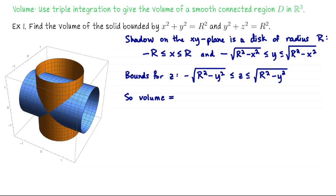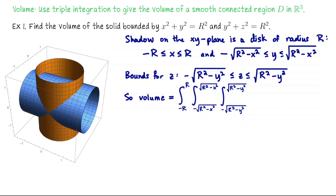The volume is the triple integral of 1 over this region, analogous to our area computations from double integration. The volume equals the integral from −R to R (outermost, constant bounds), then the integral from −√(R²−x²) to √(R²−x²), then the innermost integral from −√(R²−y²) to √(R²−y²) of 1, with order dz dy dx.